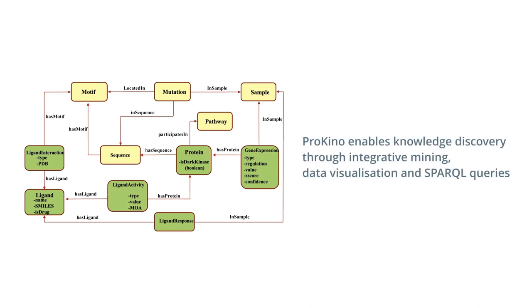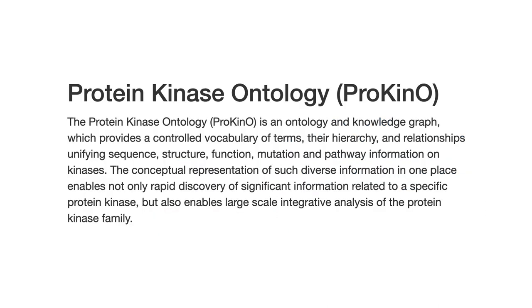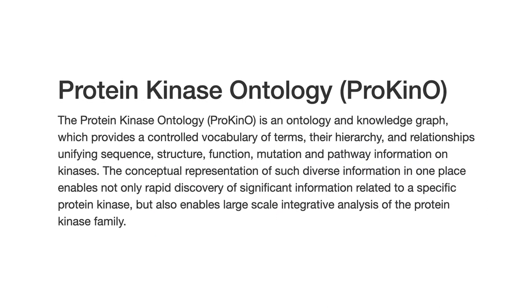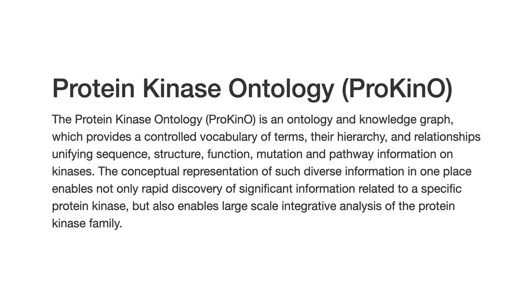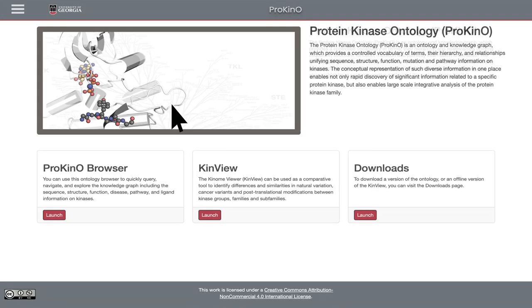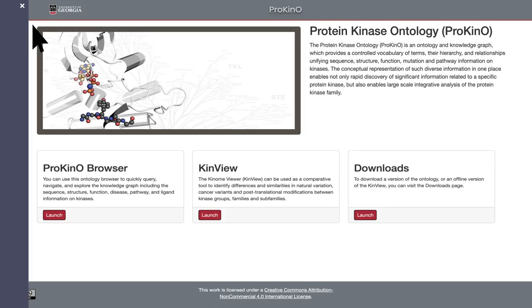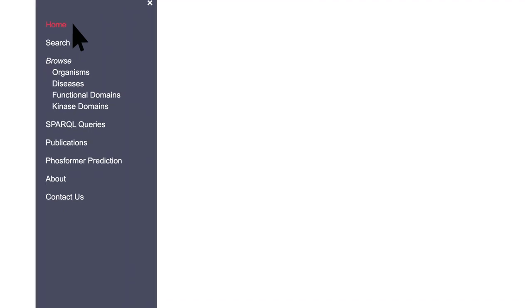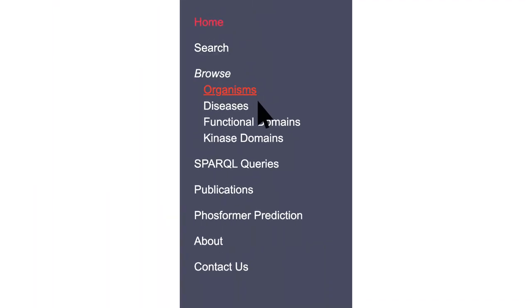We've demonstrated in this paper that by integrating these different data types, we can elucidate some of the understudied kinases. One of the tools we report on in this paper is this Protein Kinase Ontology. You can access it through the link prokino.uga.edu. If you click on the tab on the left-hand corner, you have all the information you need to get a broad idea of what this ontology is about.